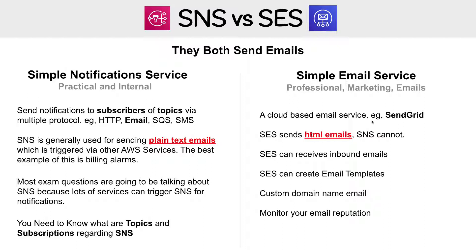The biggest thing is that you can set a custom domain name for your email with SES — for example, a custom Proco address. You can only do that with SES; you can't do that with SNS. SNS gives you this big ugly email address provided to you by Amazon.